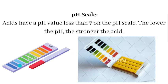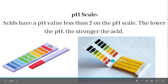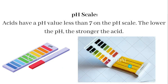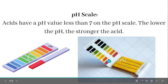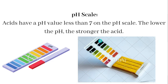Over here, the pH scale is shown. This is the pH paper. If we dip this into a substance, as you can see, there are numbers. If, for example, it turns red, then it will show a corresponding number. If the number is below 7, then it will be acidic. If the number is equal to 7, then the substance is neutral. If it is higher than 7, then the substance is basic.